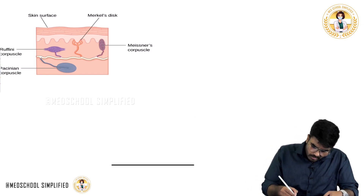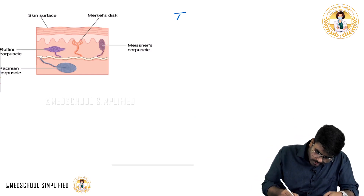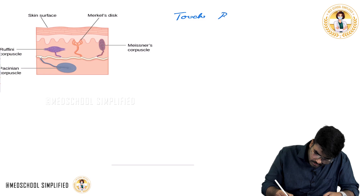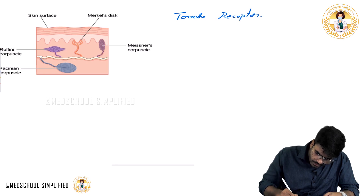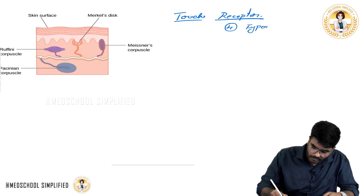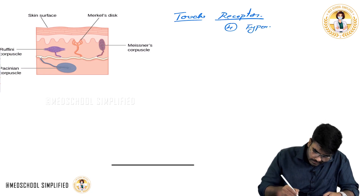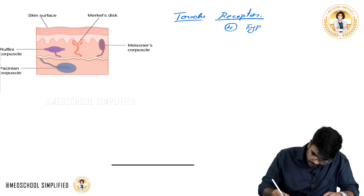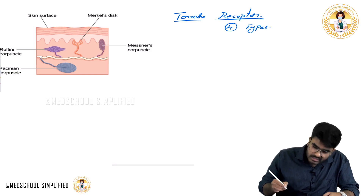Welcome back guys. Now let's discuss about touch receptors. How many types of touch receptors are there? There are four types of touch receptors.